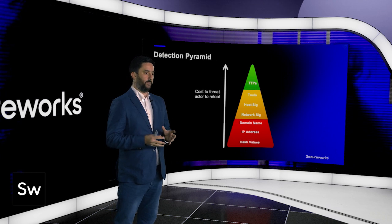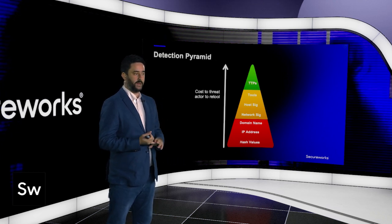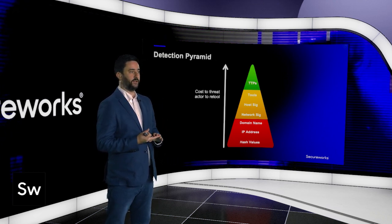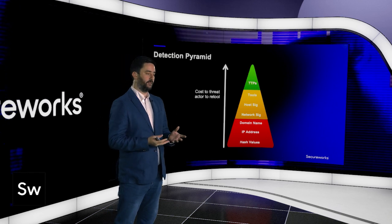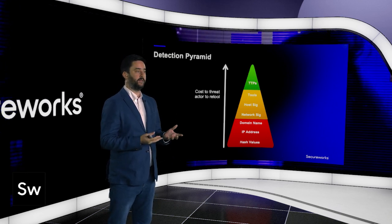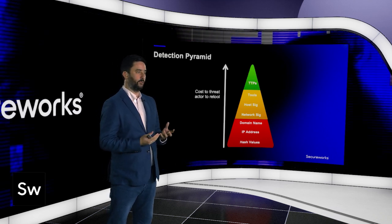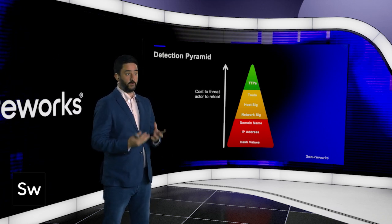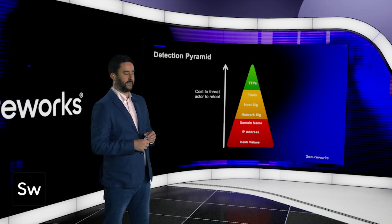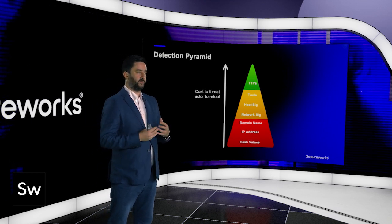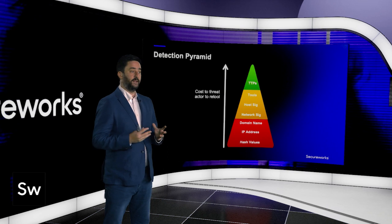I'm going to talk about the bottom part of the pyramid — what we call indicators: domain names, IP addresses, and hash values. Typically in this kind of slide, they're shown in red because they're often seen as low-value detections with a very high turnover rate, lots of noise, and lots of false positives. But our job is to make sure the indicators we're feeding into Taegis are really high value, detecting the things that we need to. Indicators play a really important part in a holistic defense posture.